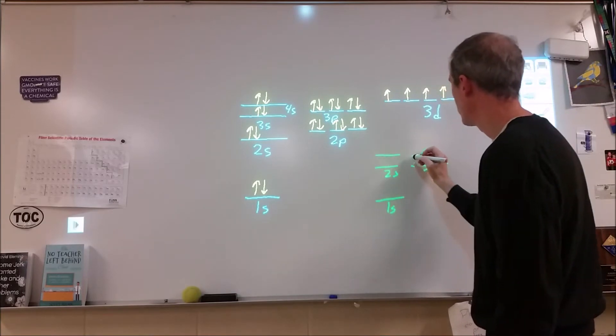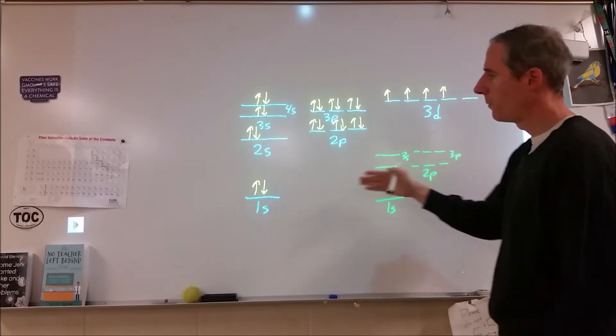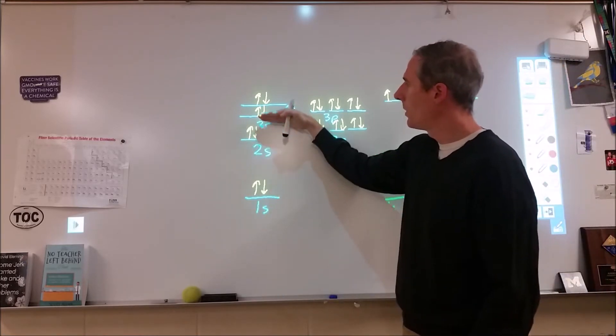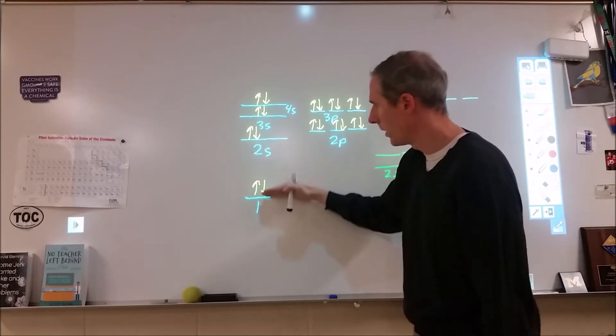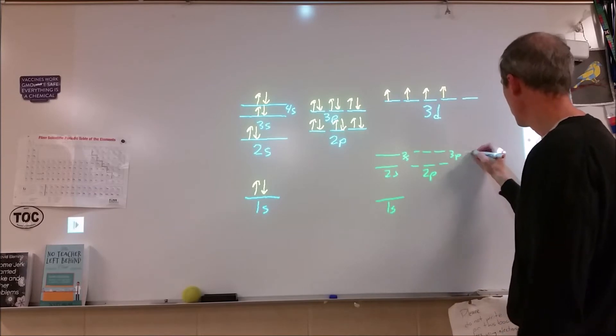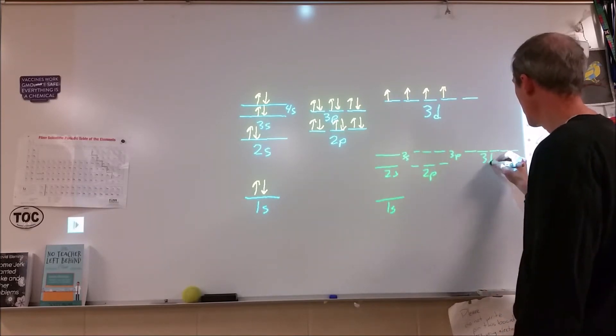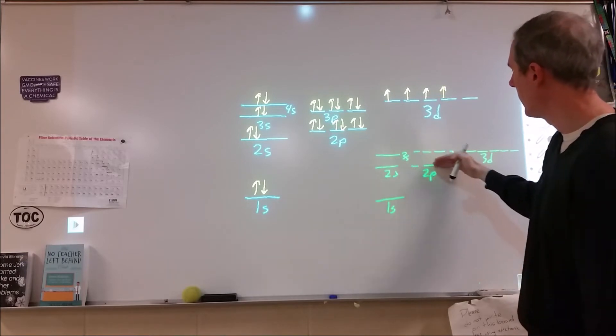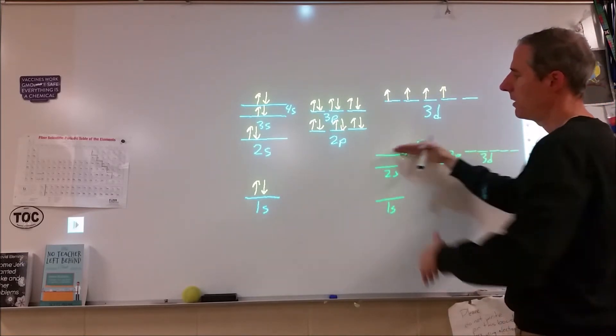And then when we get to 3s, obviously we're closer spaced, and then we get to 3p. If you're not familiar, as we go up in energy levels, the energy levels become closer spaced together. This is really underselling the gap between 1 and 2. In this case, the 3d orbitals would be the same in energy as the 3s.